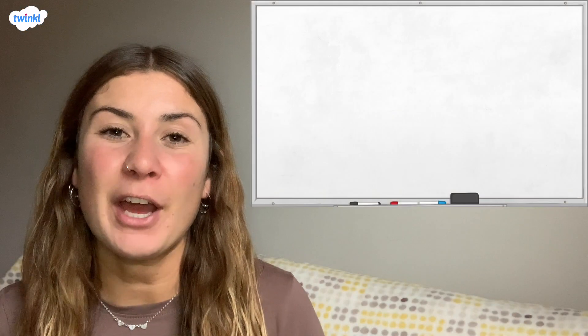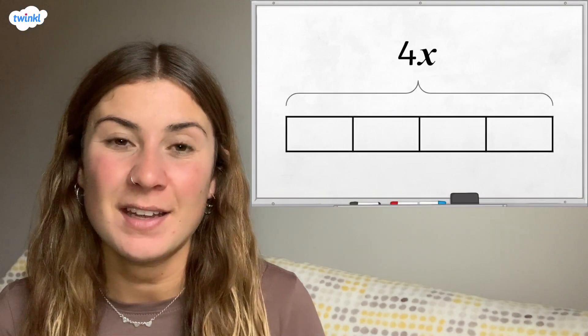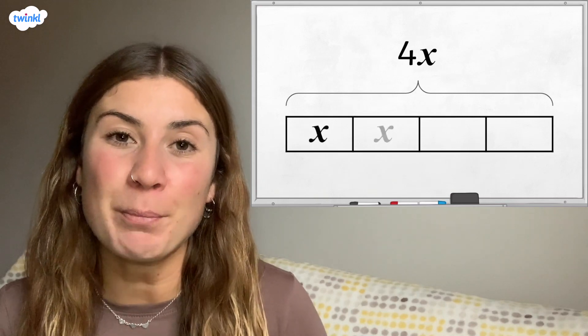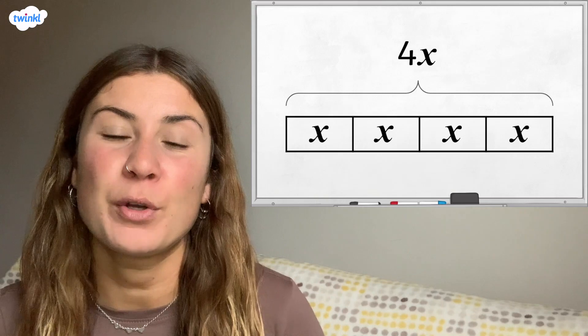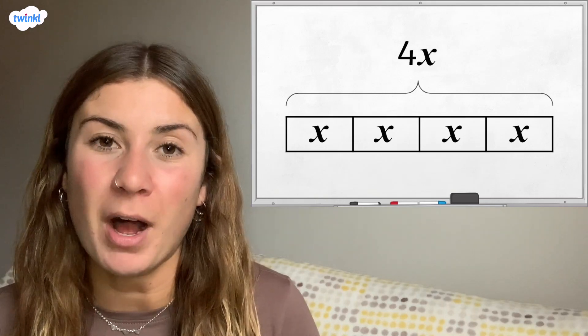Now let's have a go at forming expressions in different ways. We could use a bar model to represent the expression 4x. Each of the parts of the bar would represent x because there are four equal parts.